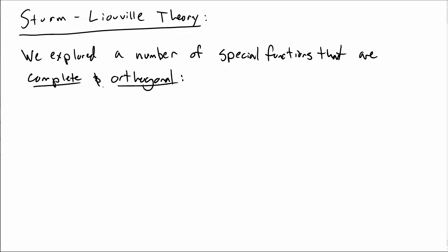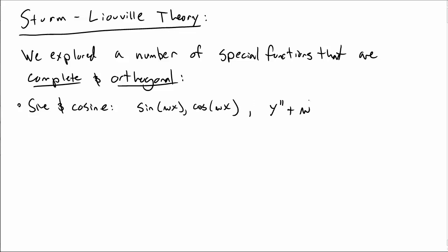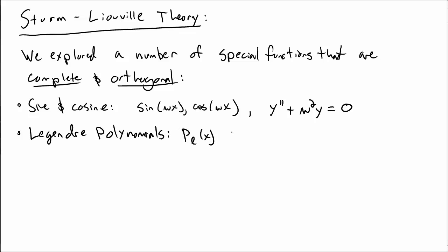For example, the simplest set of functions are sine and cosine functions, namely sine of omega x and cosine of omega x. These are solutions of the differential equation y'' + ω²y = 0. There are also Legendre polynomials, P_l, which also have this feature of completeness and orthogonality. They are solutions of the differential equation (1 - x²)y'' - 2xy' + l(l+1)y = 0.